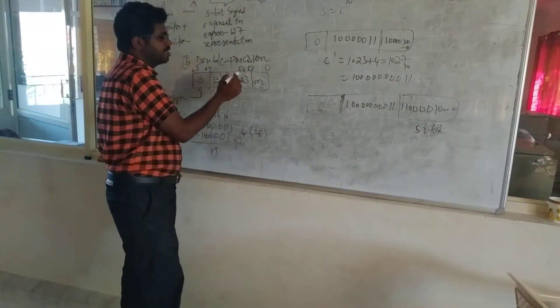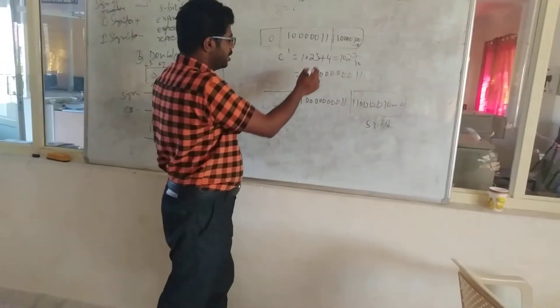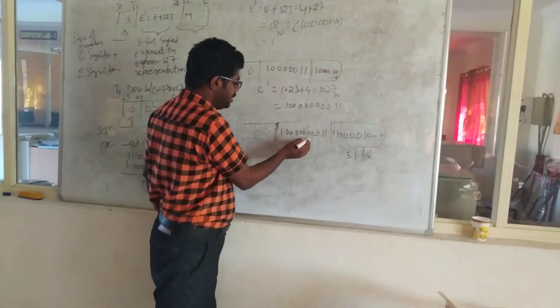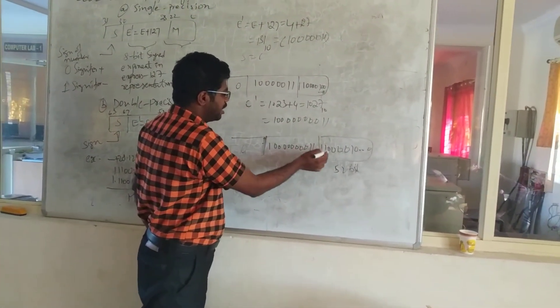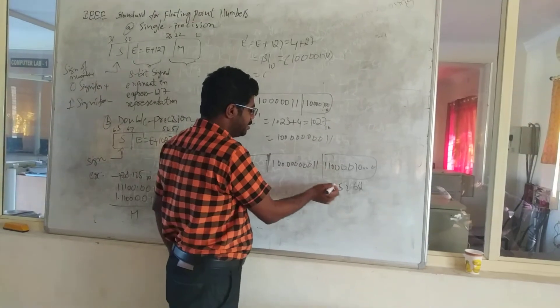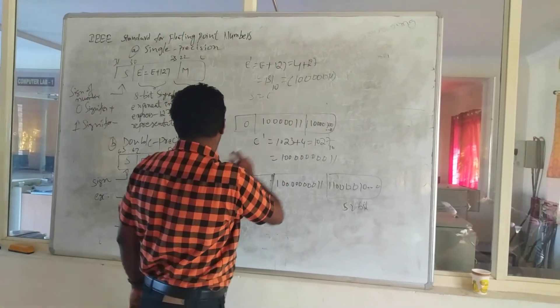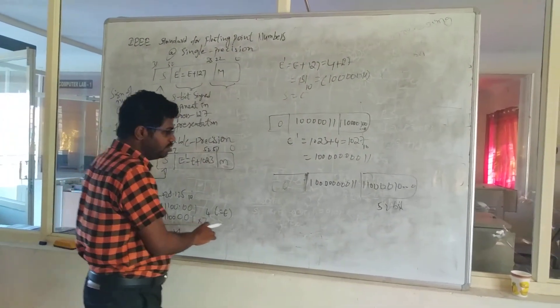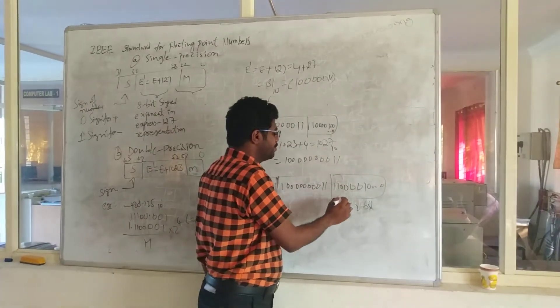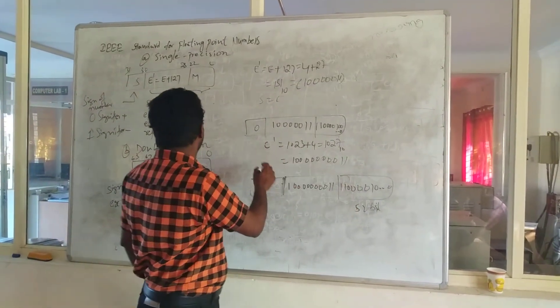Now we go for the structure. First one is 0 because the sign bit is positive, 1 followed by the exponent value - that is 1 followed by 8 zeros and 11. At last we can write the 52-bit mantissa, that is 11000001 and so on. This is the way of representing the double precision format.